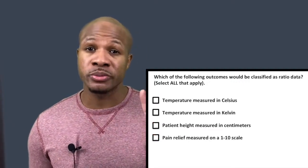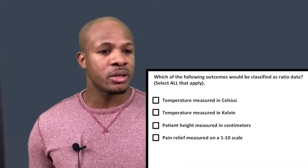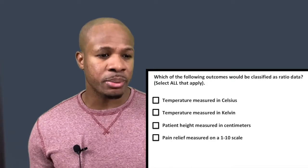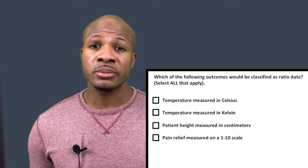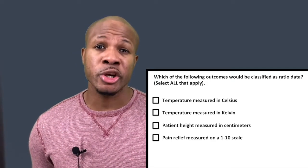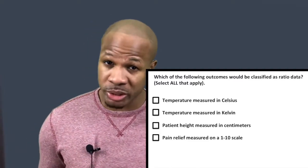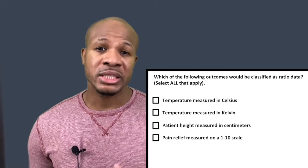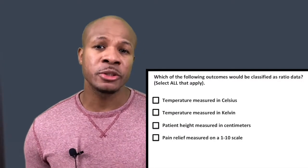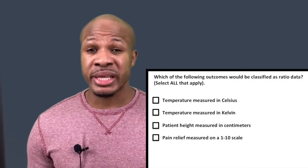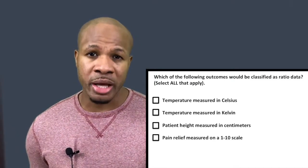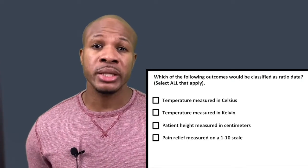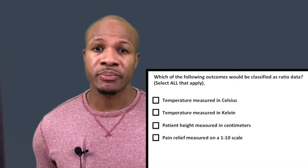Let's go on to question number two. Question number two states: which of the following outcomes will be classified as ratio data? Select all that apply. When it comes to ratio data, two main things you need to know: ratio data is continuous, and ratio data has an absolute zero. By absolute zero, it means the data does not take on negative numbers — zero is the lowest value this data can take on. Knowing these two things, let's go through the answer choices.